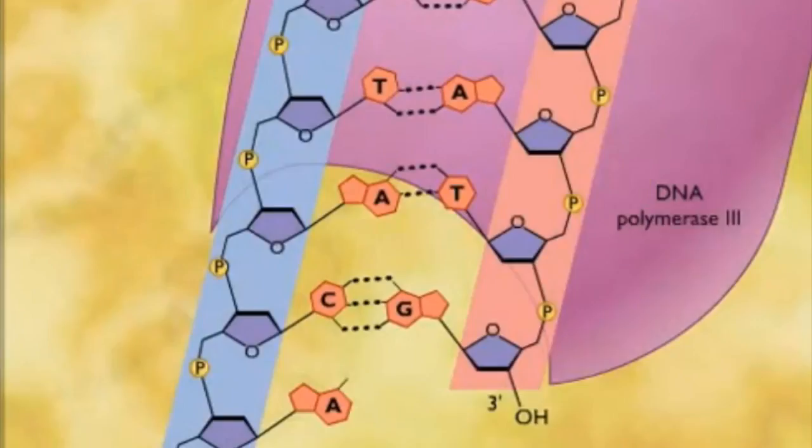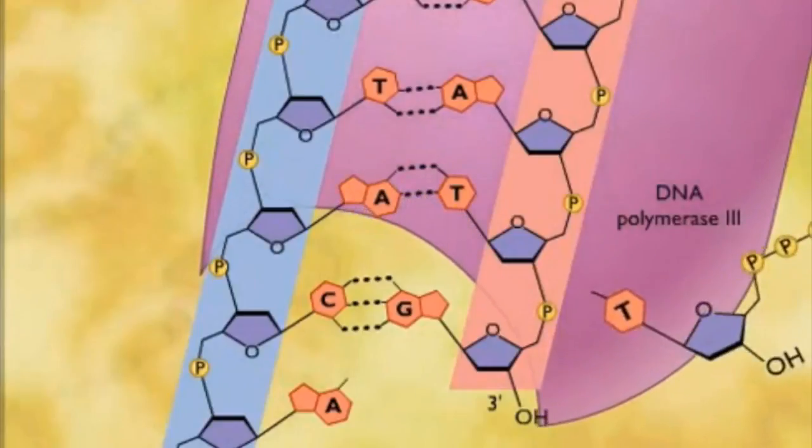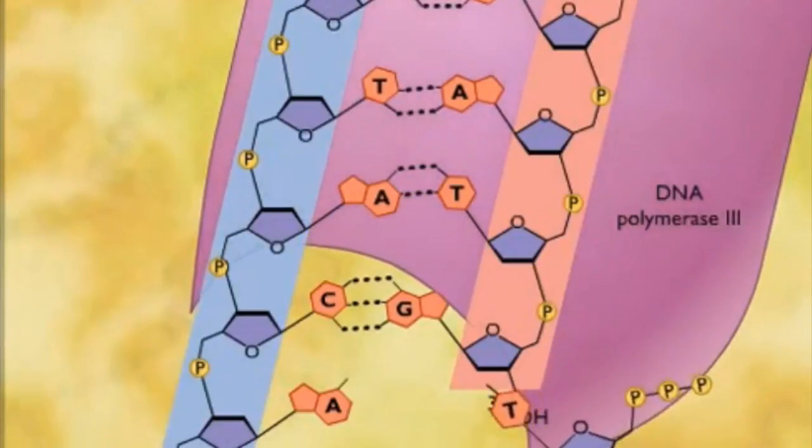Enzymes that synthesize DNA cannot initiate the synthesis of a polynucleotide. They can only add nucleotides to the end of an already existing chain that is base paired with a template strand.